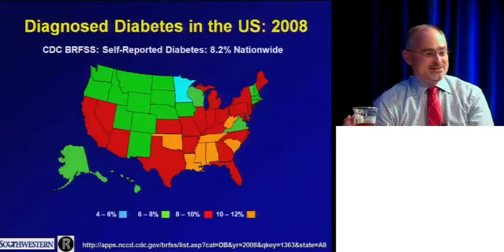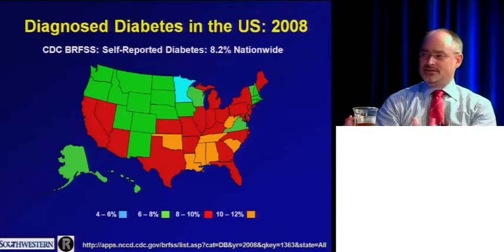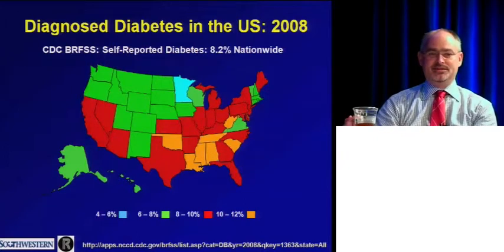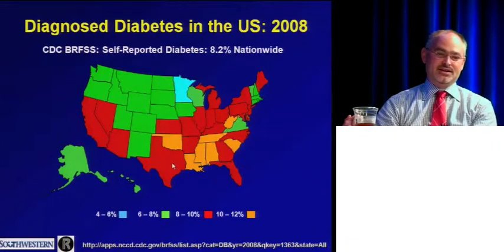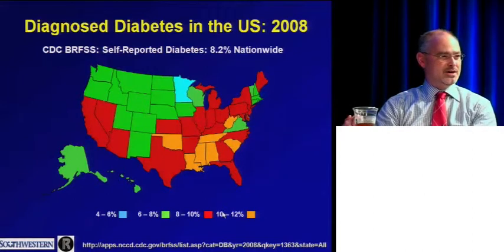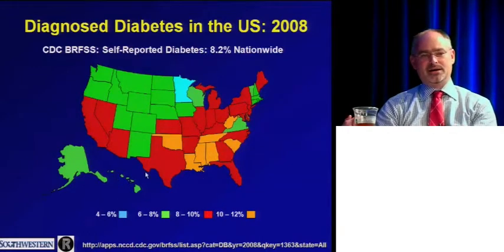We can prevent diabetes with lifestyle interventions, but we're not very effective, and we're being flooded in every clinical setting with these patients. Population prevalence estimates in 2008 show Texas just below 12%, and several states have exceeded 10%. More than one in ten adults in the United States has type 2 diabetes — this is a huge public health problem.